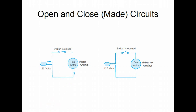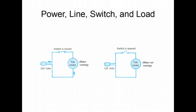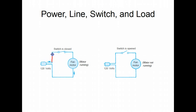Every circuit that you're going to look at and every diagram you have will have what I call the power, line, switch, and load. You need to have all four of those operating properly for an electrical circuit to operate. The power is your incoming power — the 120 volts that comes in from the wall, like the lamp you have plugged into the wall. There's always a switch to control the circuit because most of the time you don't want something running continuously. The line, or path for the current to follow, would be the wires that come out of the wall through the switch and go up to the fan motor. And the load is what does all the work in any type of circuit.